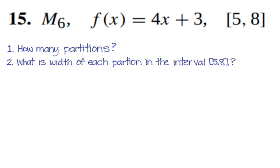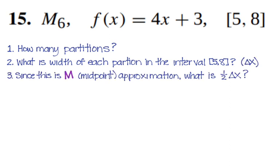What's the width of each partition? So here's our A and our B. I want you to figure that out. I'm just saying we need to find the width of that partition. You're going to do eight minus five divided by six, and you'll find the width of your partition.